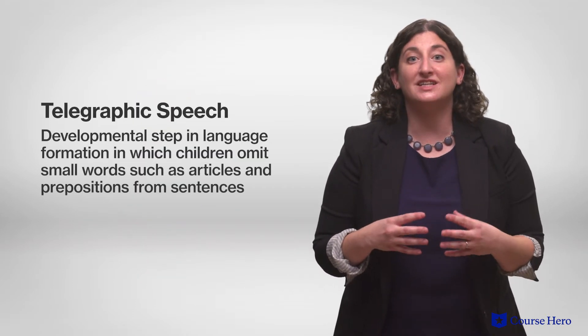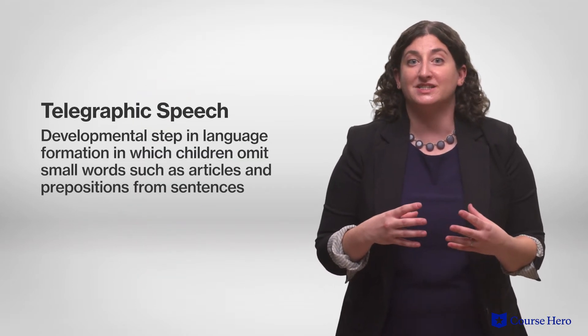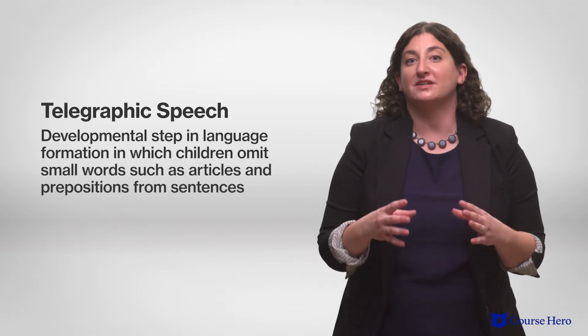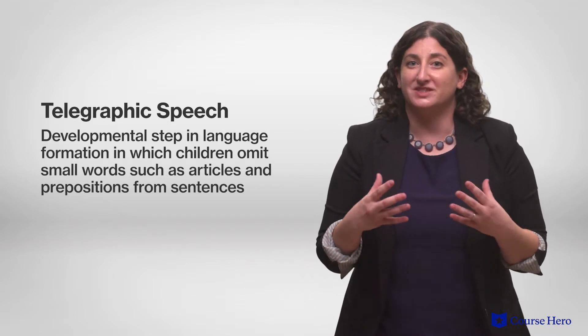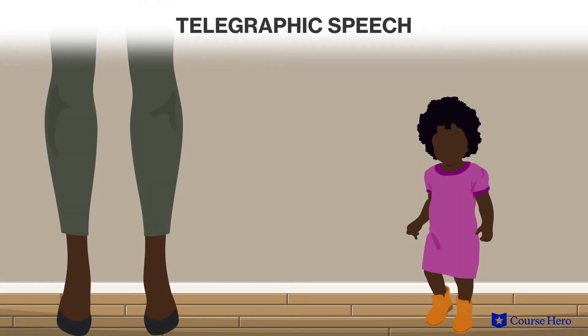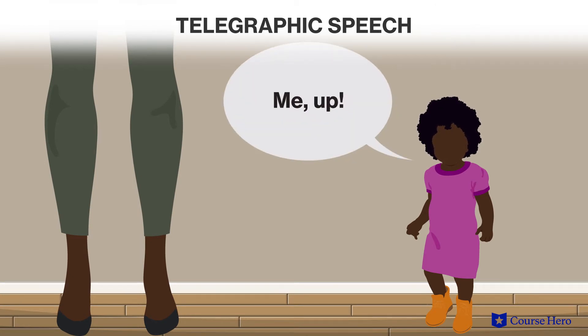At this stage, they also tend to use telegraphic speech, a developmental step in language formation involving the omission of small words, such as articles or prepositions. So instead of 'Excuse me Mother, could you please pick me up?' they will just shout, 'Me up!'